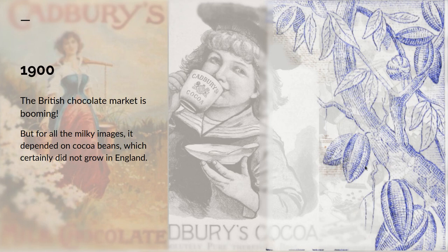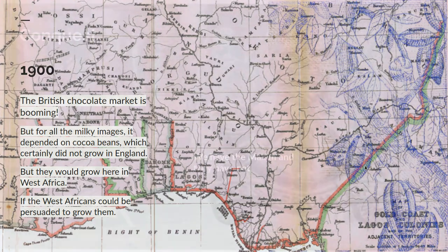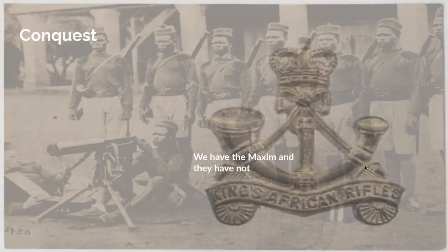Go back to 1900. The chocolate market in Britain was booming, but for all the milky images portrayed in advertising, it depended on cocoa beans — and cocoa beans certainly didn't grow in England. Cocoa beans would grow in West Africa; they're not native to West Africa, they're native to the Americas, but West Africa had the climate which would allow them to grow. If only the West Africans could be persuaded to grow them, then Cadbury's would have their beans and be able to make drinking chocolate, chocolate bars. And what was it? Conquest.